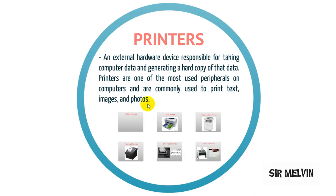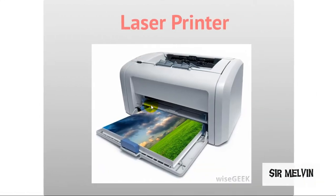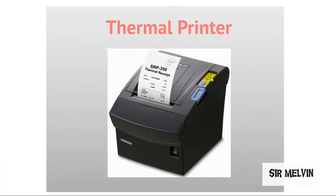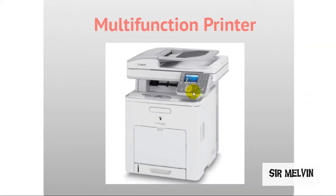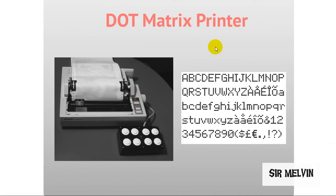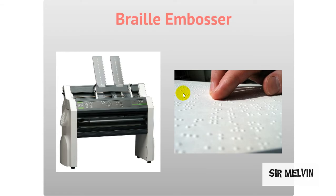Examples of output devices include printers — an external hardware device responsible for taking computer data and generating a hard copy of that data. Printers are one of the most used peripherals on computers and are commonly used to print text, images, and photos. Types include the inkjet printer, laser printer, multi-functional printer such as a 3-in-1 that can print, scan, and copy, thermal printer, dot matrix printer, and the braille embosser.